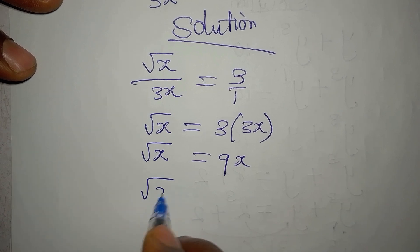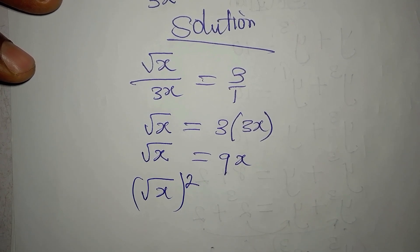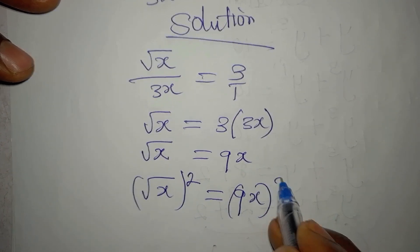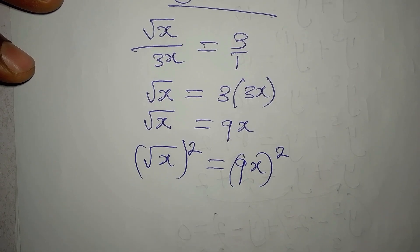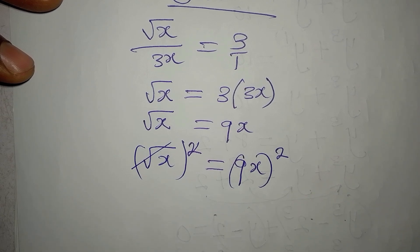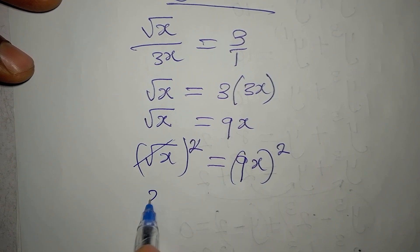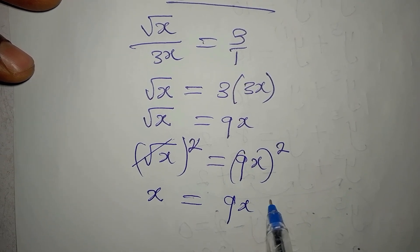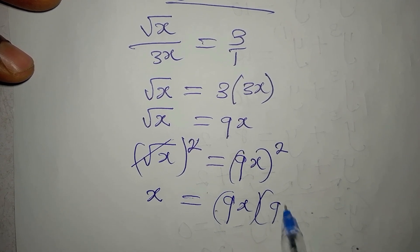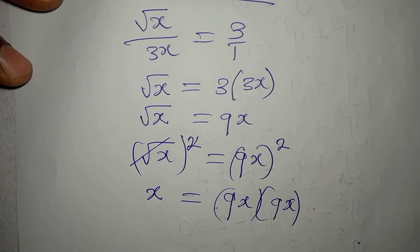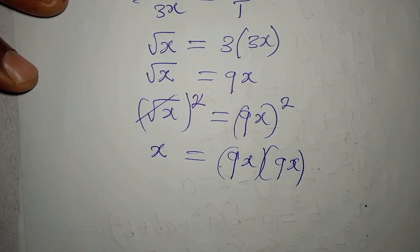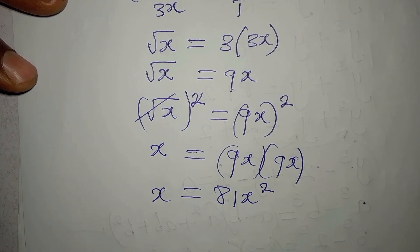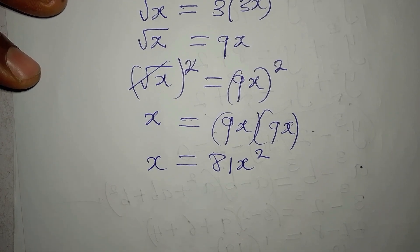Now, root x has to be squared, and 9x will also be squared. This gives us x equal to 9x multiplied by 9x because of the square. So our x is going to be 81x squared.